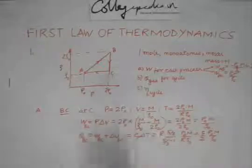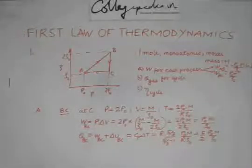Now we have QBC, we have WBC. Now the last process we need to look at is the process CA.